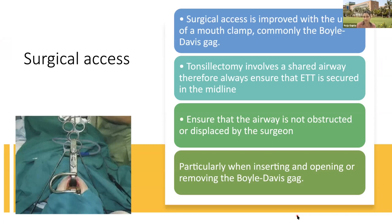Surgical access is improved by the use of a mouth clamp known as the Boyle-Davis mouth gag. Since tonsillectomy involves sharing of the airway, the endotracheal tube is secured in the midline and we must ensure the airway is not obstructed or displaced. While applying the mouth gag they might dislodge the RAE tube, which has a preformed curve at the level of lips, and even with neck extension it can come out. We must be particularly careful during insertion, opening, or removal of the gag.